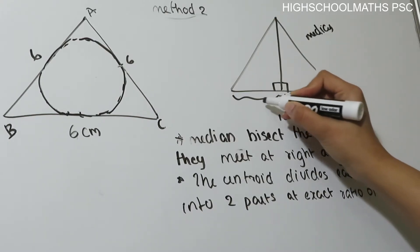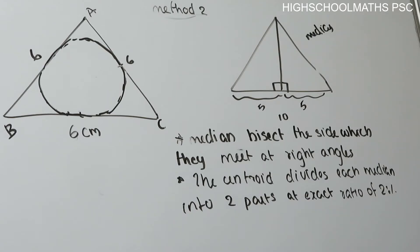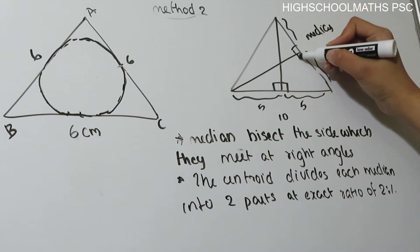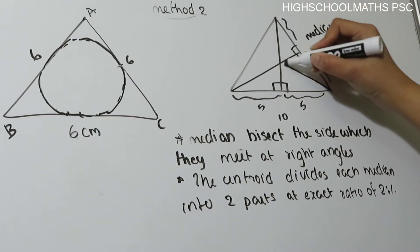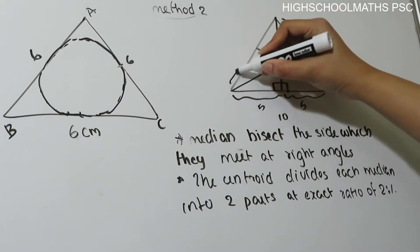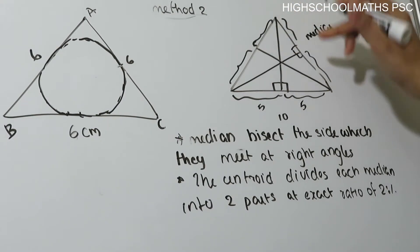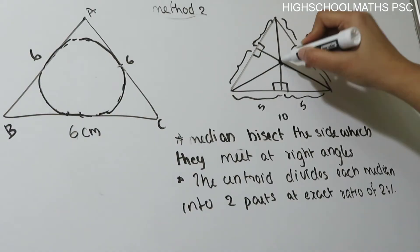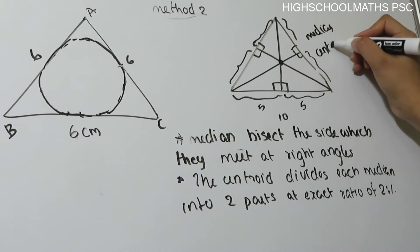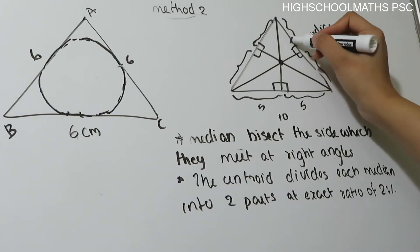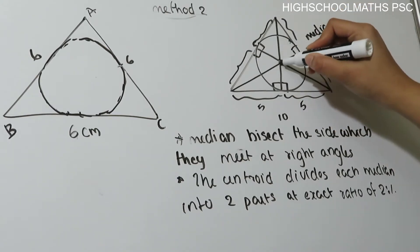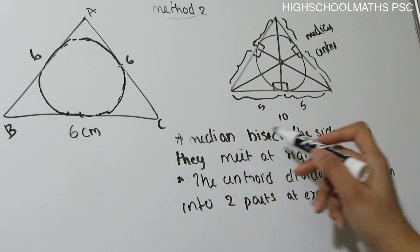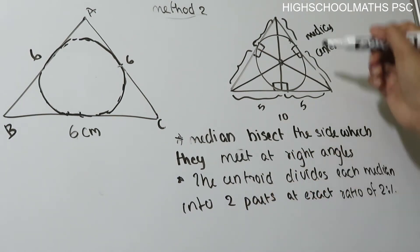The total side is 6 cm. It is bisected into 5 and 5. If you have a vertex, this is equal to 90 degrees. With the third median, you can see the opposite side. This is the center of the equilateral triangle. The median bisects the side which they meet at right angles. Here is the center of the equilateral triangle.